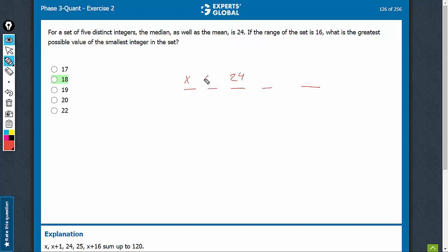The minimum value of the other number can be x plus 1. We can't take x. See, the numbers are all distinct.